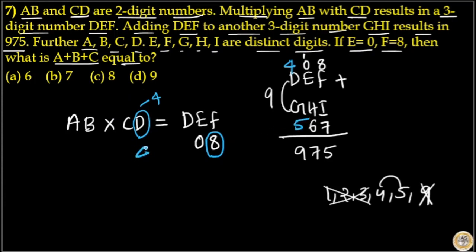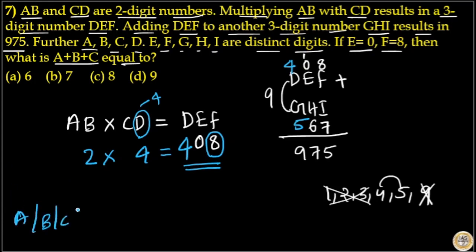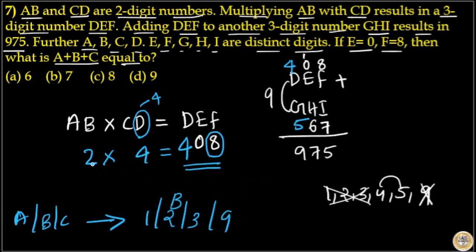If D is four, then DEF is 408. AB into CD gives 408. Four into which number gives eight? Four into two is eight, so B is equal to two. AB and C will be from one, two, three, or nine.